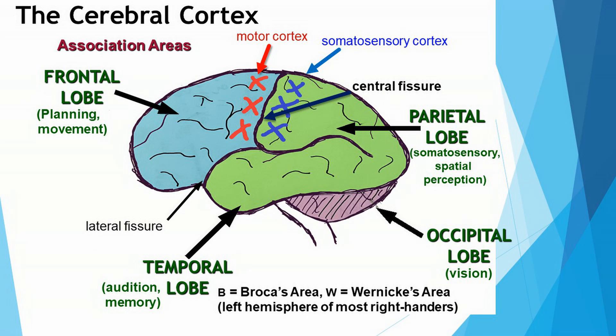Again, the cerebral cortex is the newest part of the brain from an evolutionary perspective, and you definitely need to know that. When you look at a drawing of a human brain, I also want you to know which is the front and which is the back. The human cerebral cortex is divided into parts called lobes, and we're going to be talking about the different lobes of the cerebral cortex, and you will need to know the functions of each.